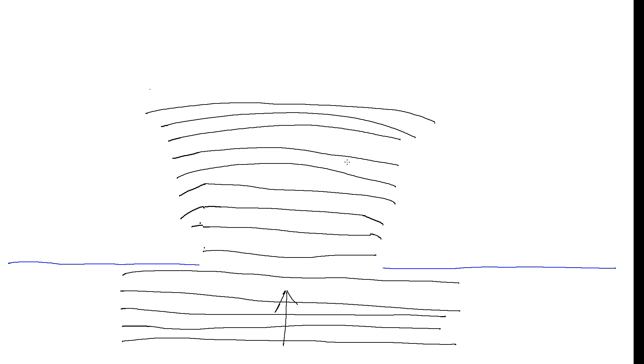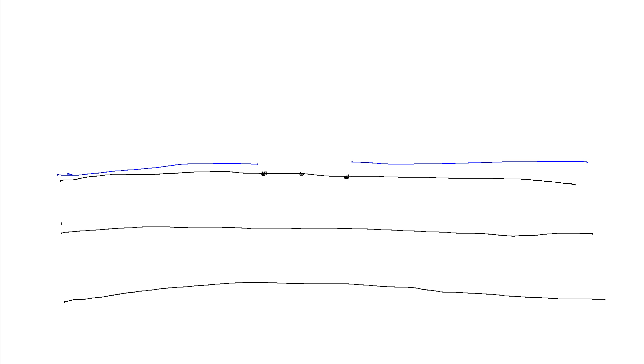So why does this happen? Why should a wave suddenly start spreading out when passing through a gap? We can try to explain it using something called the Huygens-Fresnel principle. Sketching another gap and zooming in a little, the Huygens-Fresnel principle basically says that at every point on a wavefront, that point is acting like a new source of a wave. So along the wavefront we've got a collection of points all acting as sources of waves.